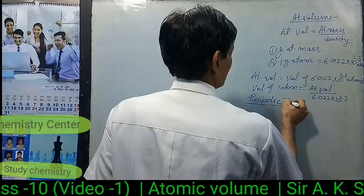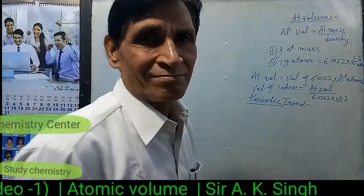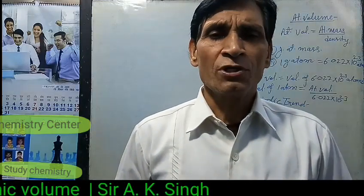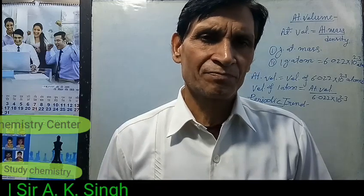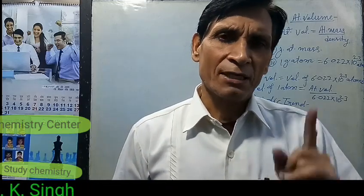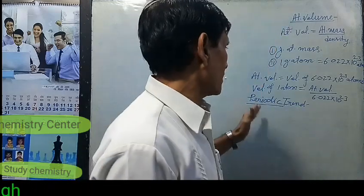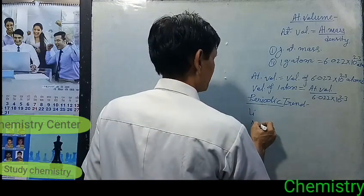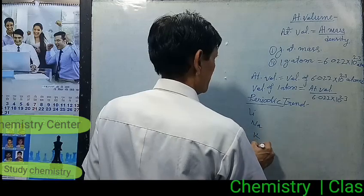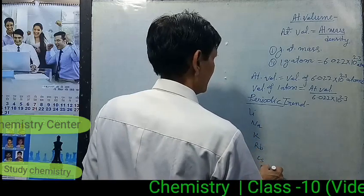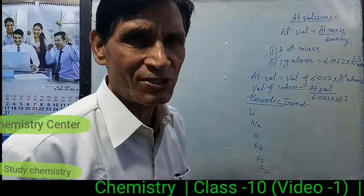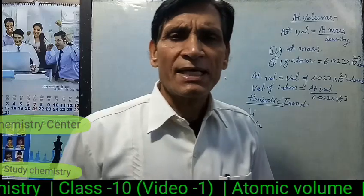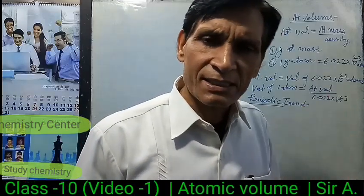Now, the periodic trend in atomic volume. First, moving down the group — for example, the Group 1 elements: lithium, sodium, potassium, rubidium, cesium, and francium — atomic size almost always increases as we go down the group.